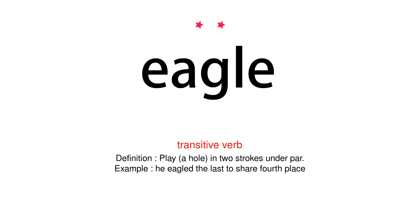Transitive Verb. Definition: Play a hole in two strokes under par. Example: He eagled the last to share fourth place.